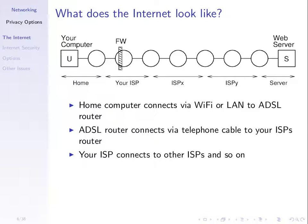Your ISP may connect to another internet service provider, inside Thailand or outside the country, which connects to others, and so on. There may be multiple ISPs across the globe that our data traverses when we connect to a web server. We'll use this diagram to illustrate how different security techniques provide privacy. Your computer, the web server we want to communicate with, and the circles are routers.